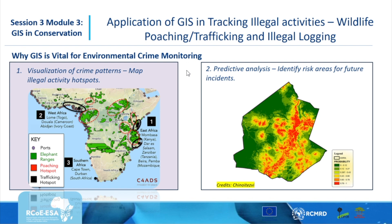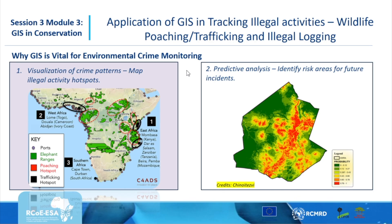Map number two is about predictive analysis, identifying risk areas for future incidents. It involves overlaying different datasets within the geospatial environment, such as settlement or population, land use and land cover, protected areas, elevation, and climate. An analysis is then done to understand how these factors contribute to creating risky environments for our wildlife or forests.